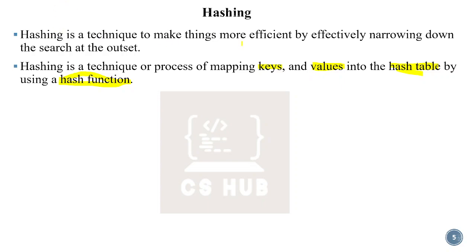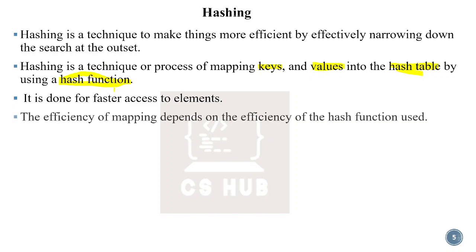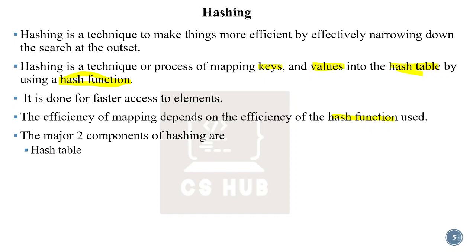Hashing is the technique to make things more efficient by effectively narrowing down the search at the outset. It is done for faster access to elements. The efficiency of mapping depends on the efficiency of the hash function used. The two major components of hashing are the hash table and the hash function.